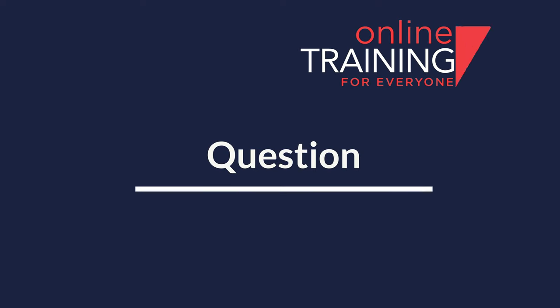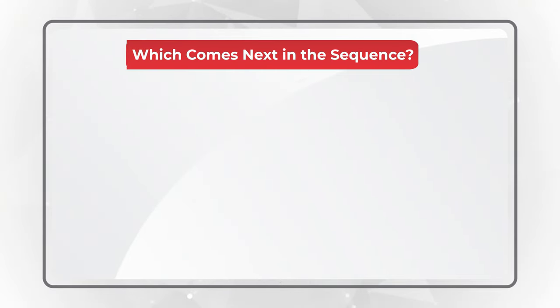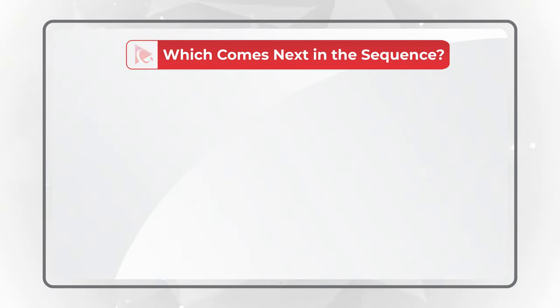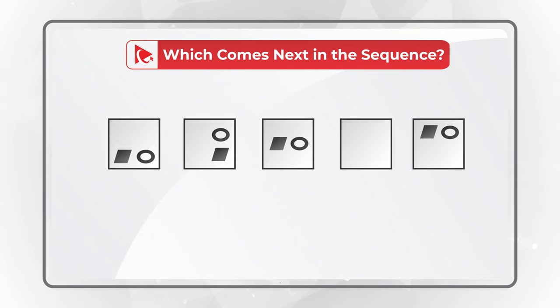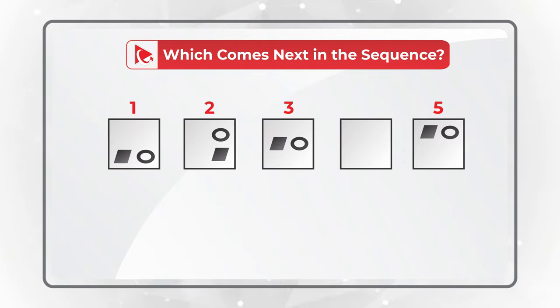I love this question because it really makes you think in order to get to the correct solution. You need to determine which shape comes next in the sequence. You're presented with a series of five shapes. Squares 1, 2, 3, and 5 have other smaller shapes inside, and you need to determine shape 4.